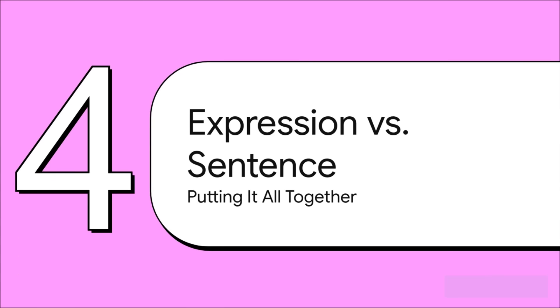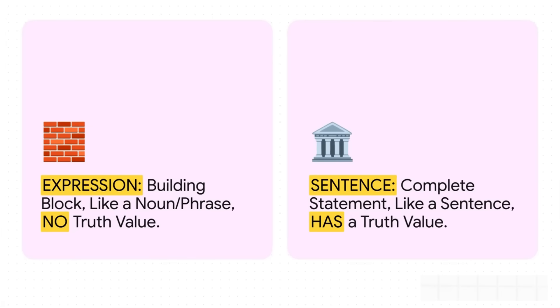All right. We've looked at the parts. We've looked at the complete thoughts. Now for the main event. Let's put them head to head in a final showdown to really lock this concept in. Here it is in a nutshell. An expression? That's your building block. It's like a noun or a phrase. And it has absolutely no truth value. A sentence? That's the whole statement. A complete thought. And it always has a truth value. It's got to be either true, false, or its truth depends on a variable.